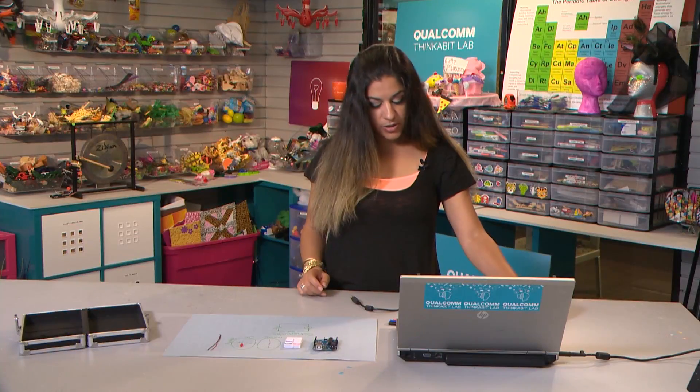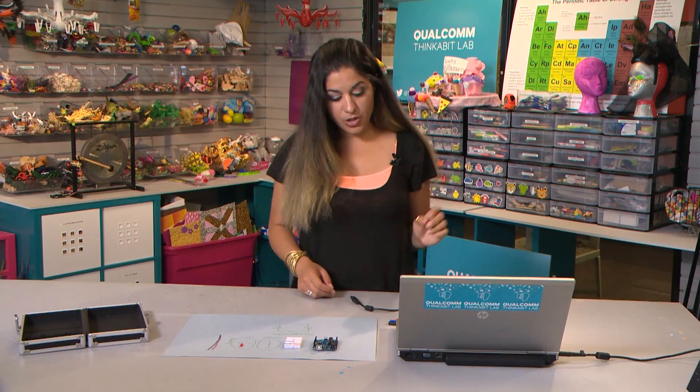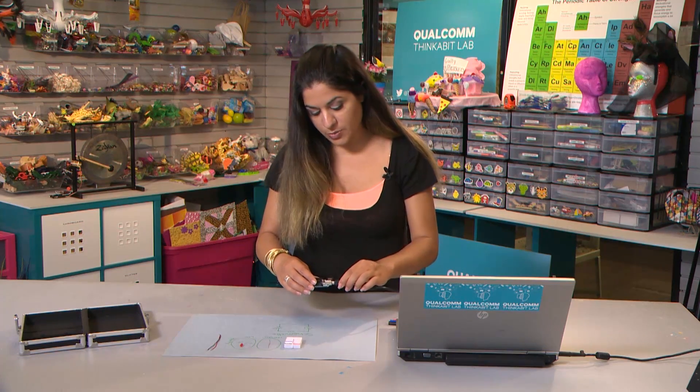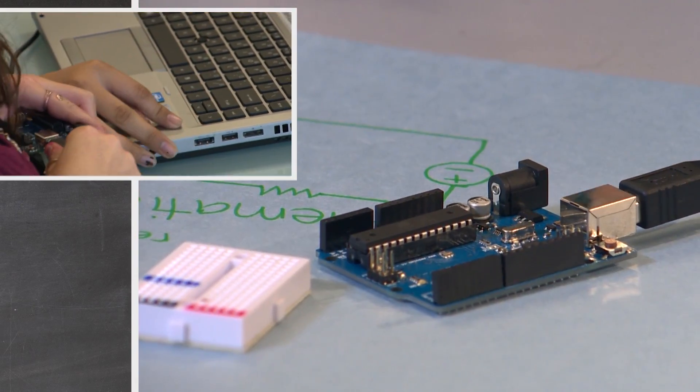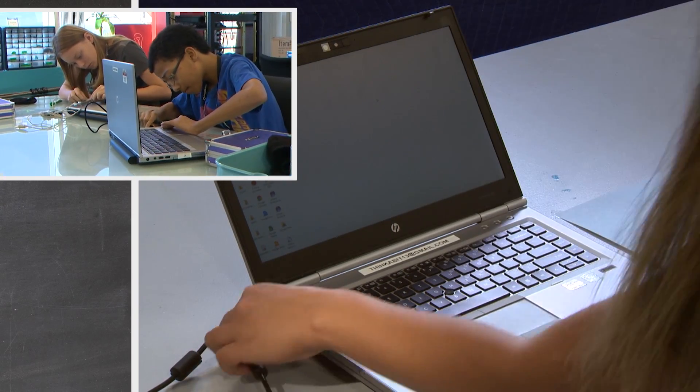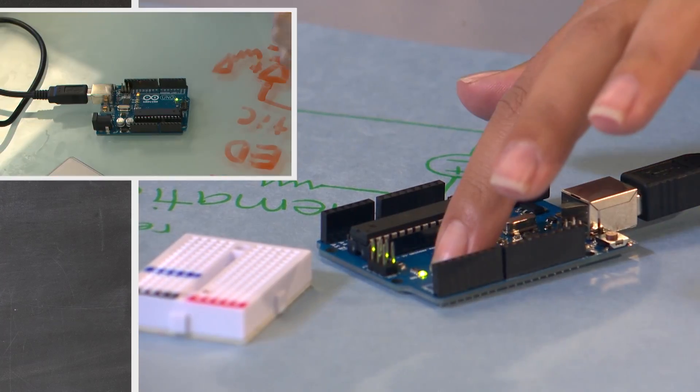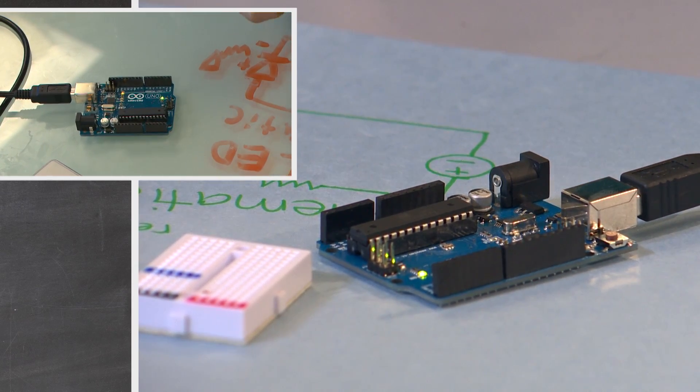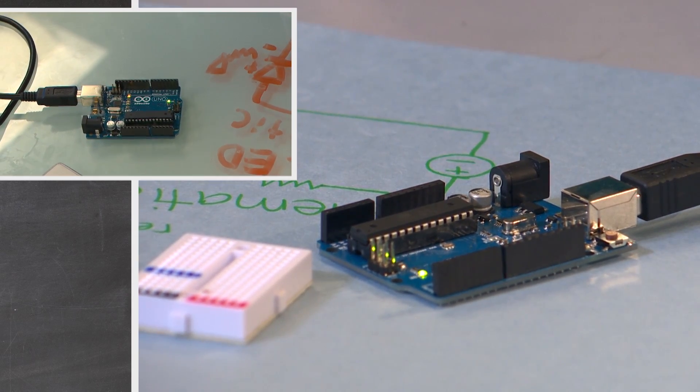To get power, we're going to use our Arduino like a fancy battery. To do that, all I need you to do is connect your Arduino using the USB cable that you have and connect that Arduino to your laptop. When you've done that correctly, you'll notice that there's a green light on your Arduino. If you have any other lights on your Arduino, don't worry about it. So long as you have your green light, you're good to go.